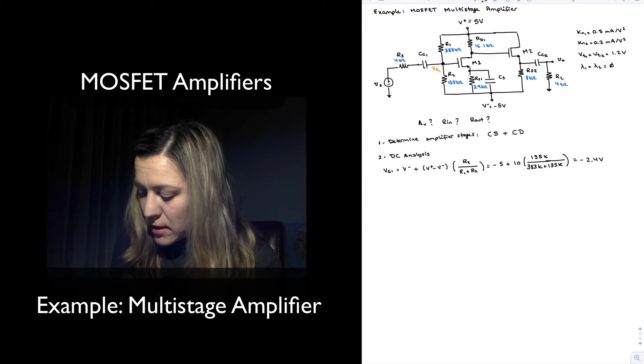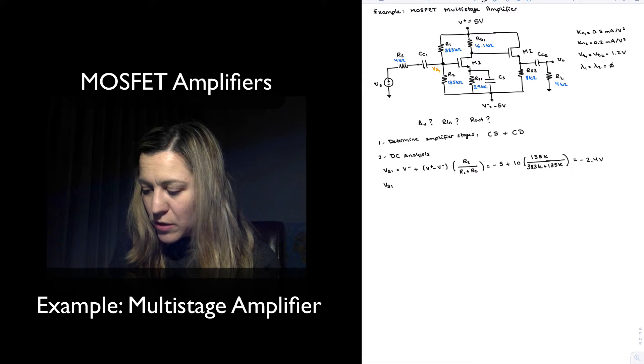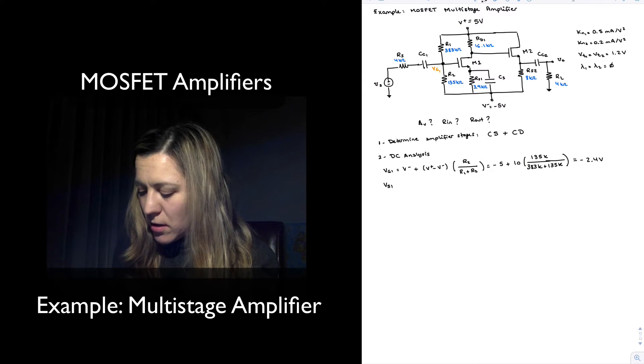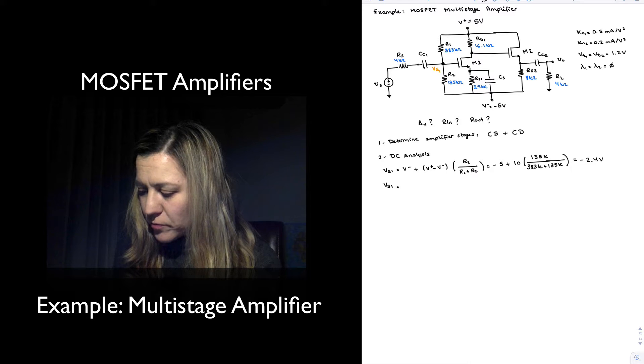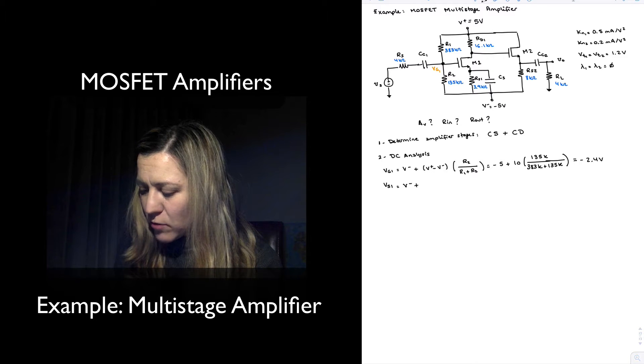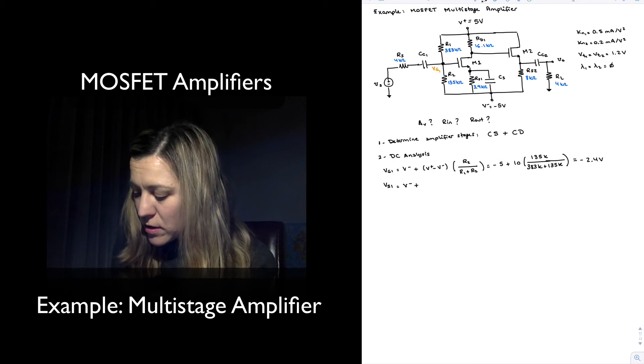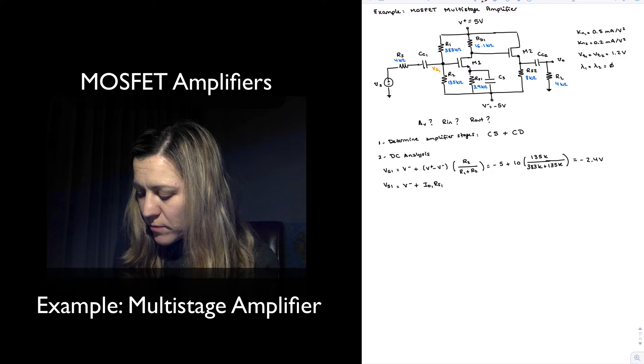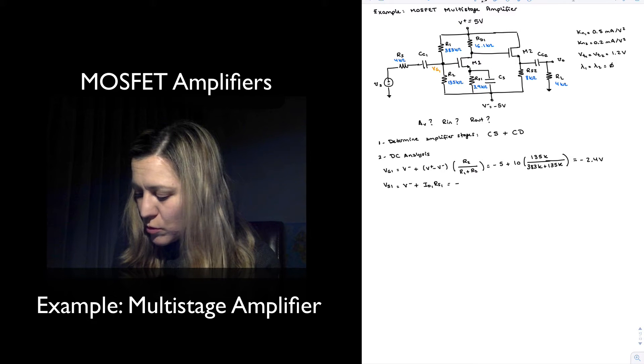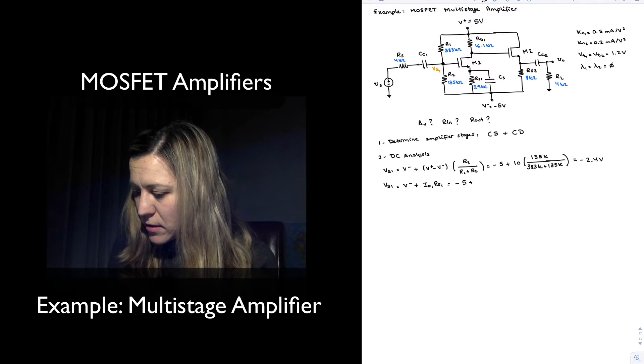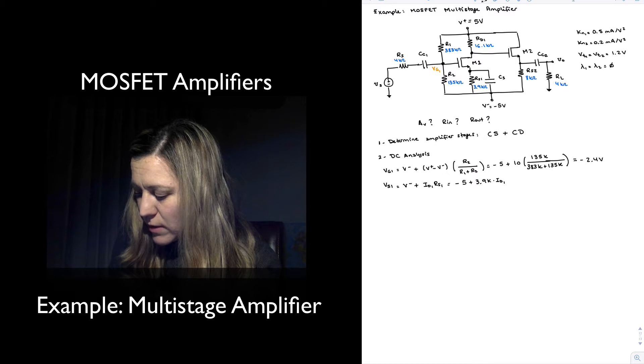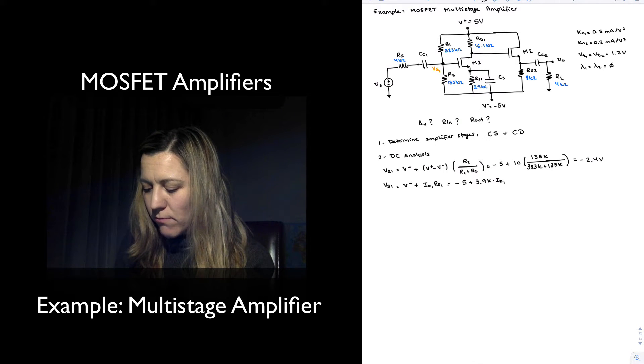I can see that my VS1, the voltage at my source for transistor M1, is going to be equal to V minus plus the voltage drop across RS1, which is ID1 times RS1, or in other words, minus 5 plus 3.9k times ID1.